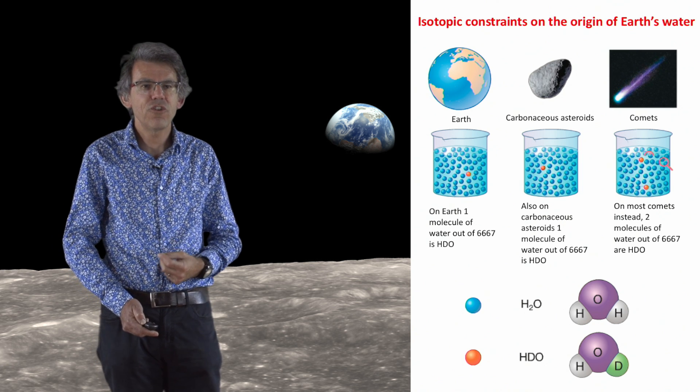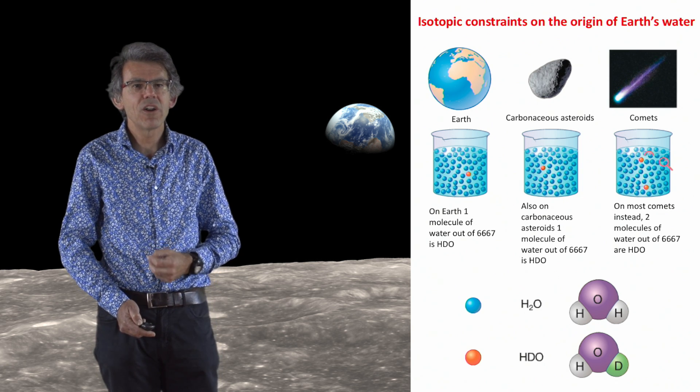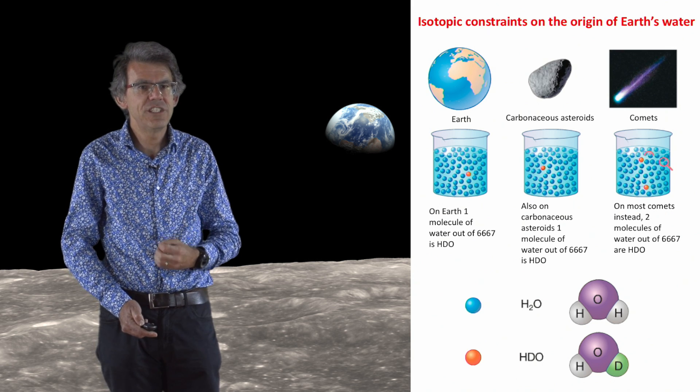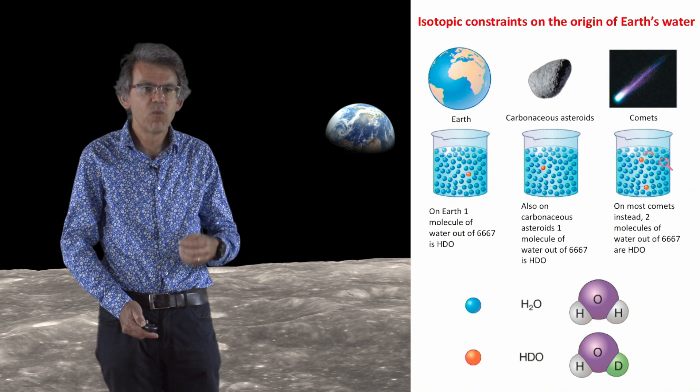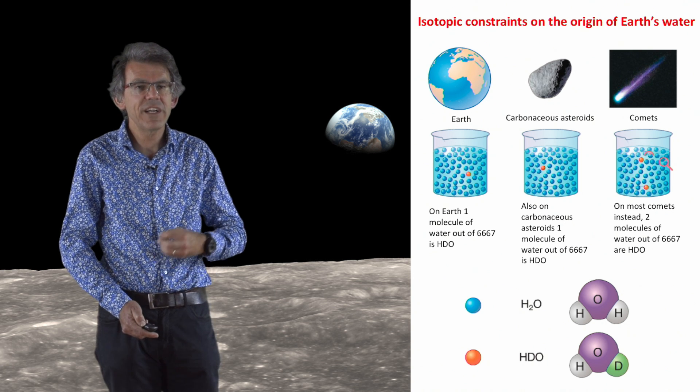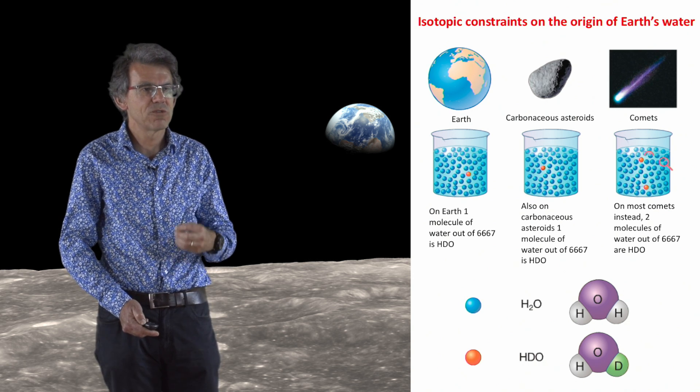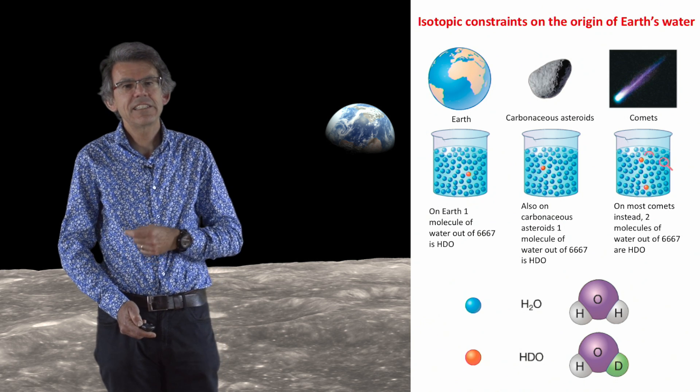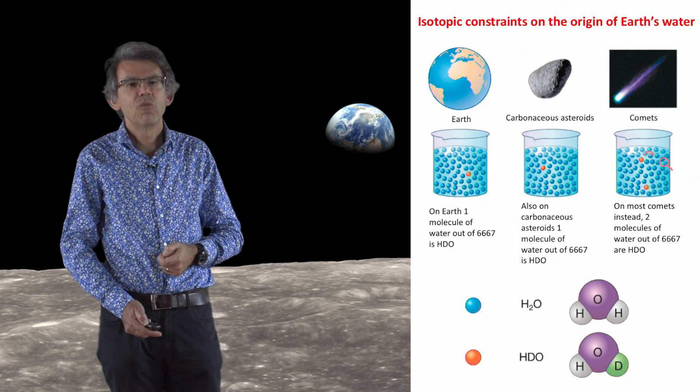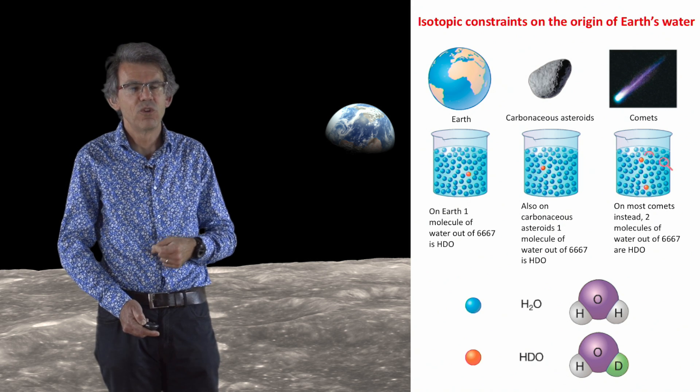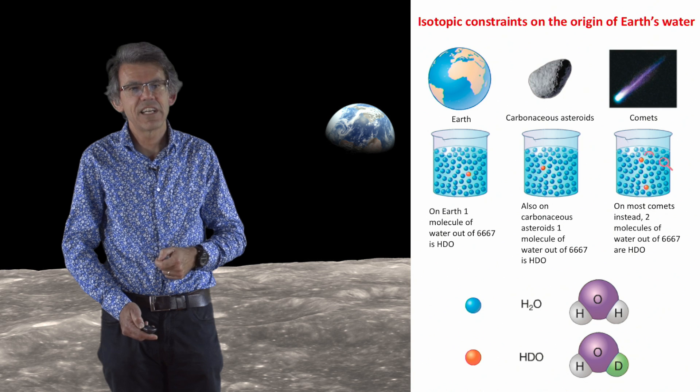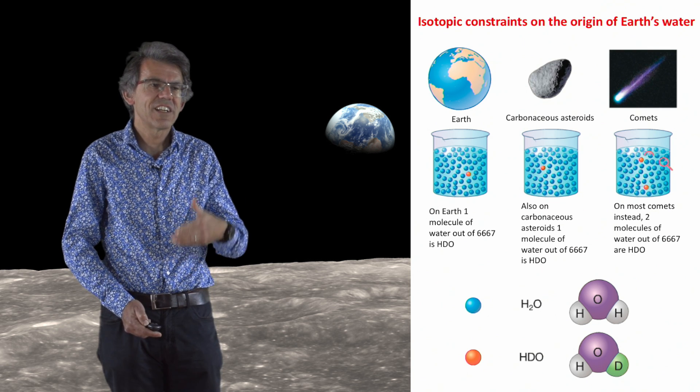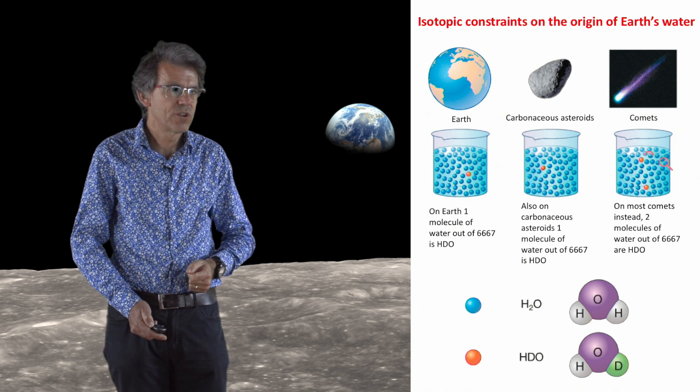So when we analyze the water on Earth, we find that one molecule of water out of 6,667 is made of HDO. And if we analyze the water in carbonaceous meteorites, we find the same. One molecule of water out of 6,667 is made of HDO. Instead, when we analyze the water of most comets, we find that two molecules of water out of 6,667 are made of HDO. So this suggests that carbonaceous asteroids are the main contributors of water to the Earth.